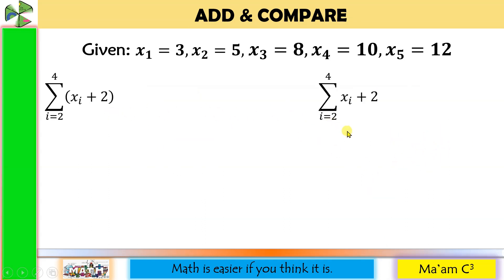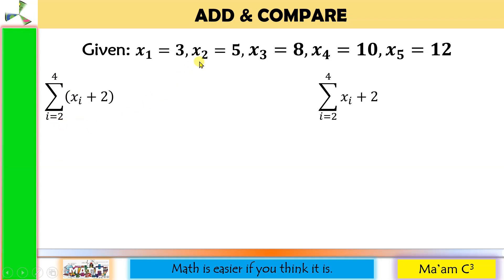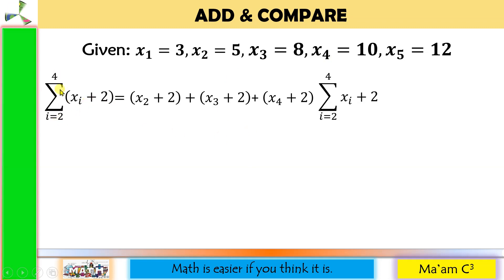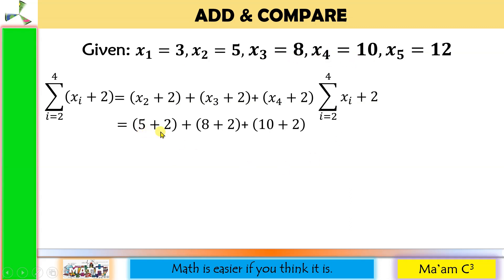Let's have some more. Take note of the difference: in this expression, X sub I plus 2 is enclosed in parentheses. This is the summation of quantity X sub I plus 2, I going from 2 to 4. So we have X sub 2 plus 2, then X sub 3 plus 2, then X sub 4 plus 2. Substituting: X sub 2 is 5, so 5 plus 2 is 7; X sub 3 is 8, so 8 plus 2 is 10; X sub 4 is 10, so 10 plus 2 is 12. 7 plus 10 is 17, and 17 plus 12 is 29.